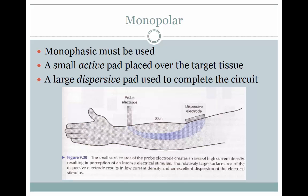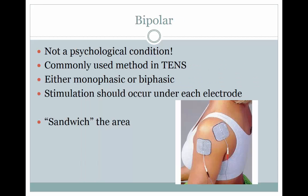Bipolar pad placement is another option. It occurs when you have two active pads that are equal size. This is a commonly used method in TENS, or transcutaneous electrical nerve stimulation, and can be utilized with either a monophasic or a biphasic current. The patient should report equal stimulation under each electrode placement. The typical protocol is to sandwich the painful or treatment area so that if you drew a straight line from one pad to another, it would run directly through the target area.